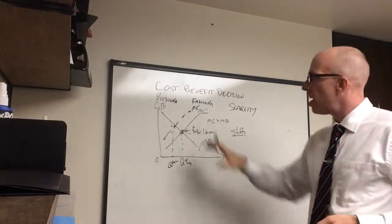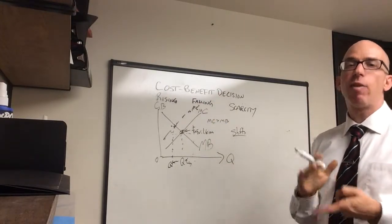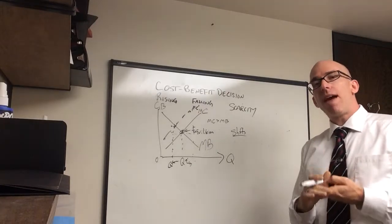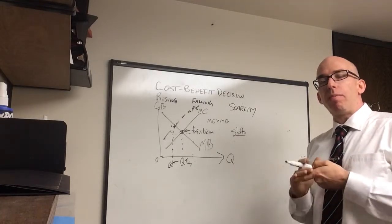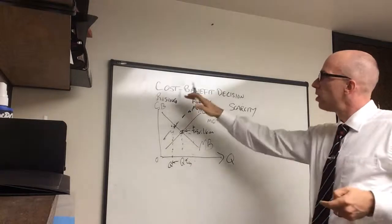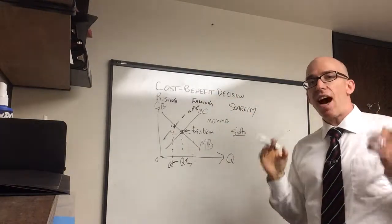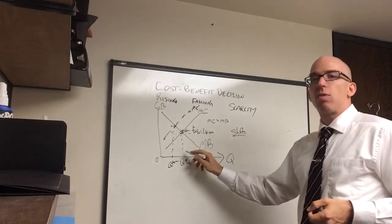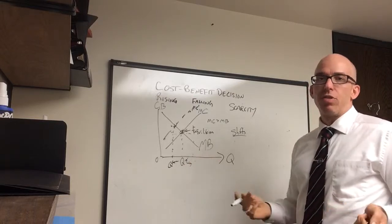So, to summarize, cost-benefit decisions come up in every production, every microeconomic decision, every macroeconomic decision. When people or businesses or governments follow this, then they can make the optimal decision and do just the right amount of whatever it is they're trying to do.